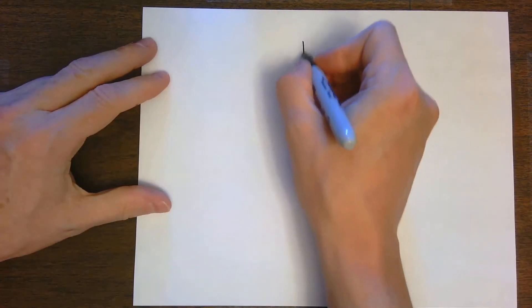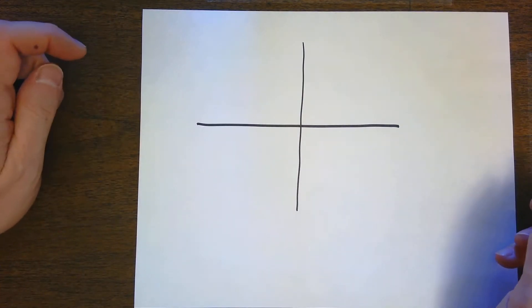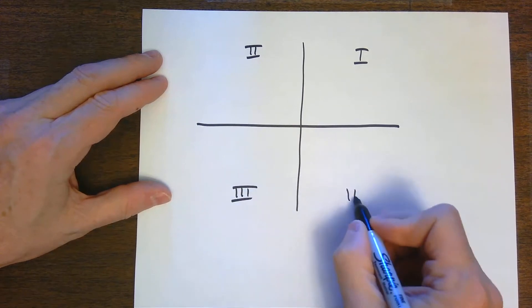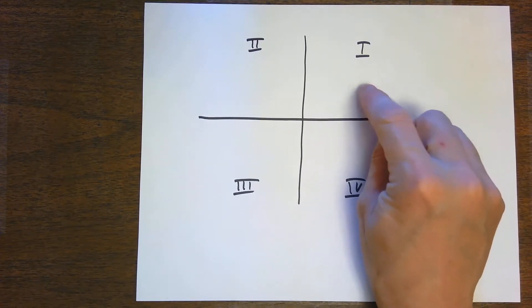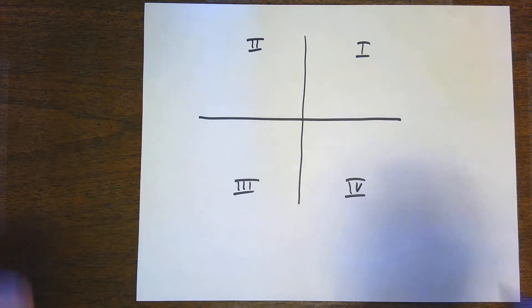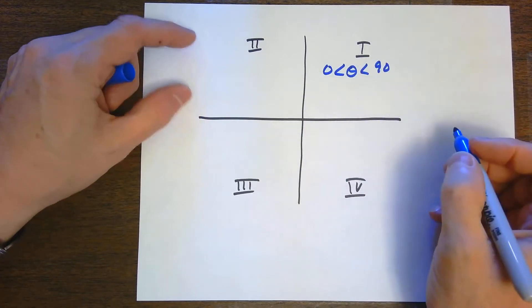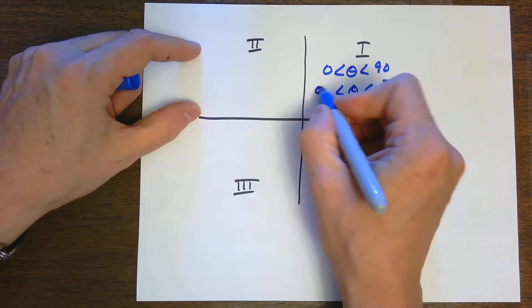Let's talk about quadrants and the range of angles in each. In the first quadrant, angles are between 0 and 90 degrees, or 0 and π/2 in radians. In the second quadrant, angles are between 90 and 180 degrees, or π/2 and π. In the third quadrant, between 180 and 270 degrees, or π and 3π/2. In the fourth quadrant, between 270 and 360 degrees, or 3π/2 and 2π.